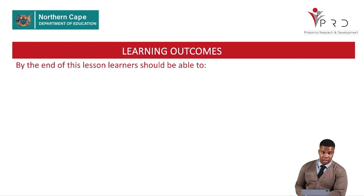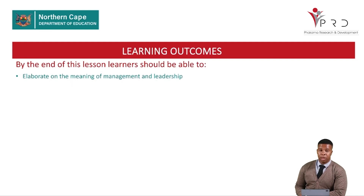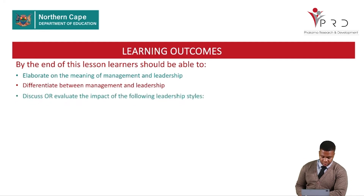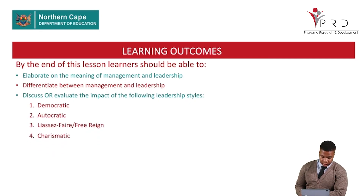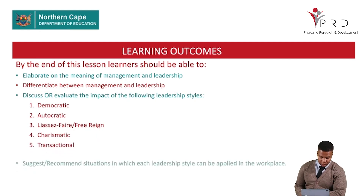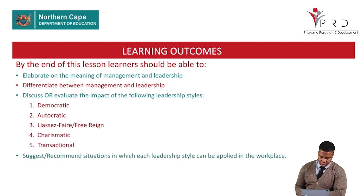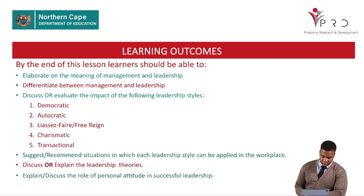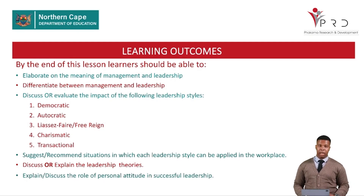Learning outcomes: by the end of this lesson, you should be able to elaborate on the meaning of management and leadership, differentiate between management and leadership, and discuss or evaluate the impact of the leadership styles — democratic, autocratic, laissez-faire, charismatic, and transactional. You should also recommend situations in which each leadership style can be applied in the workplace, discuss the leadership theories, and explain the role of personal attitude in successful leadership.